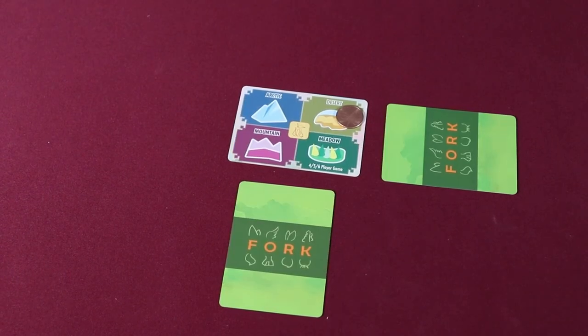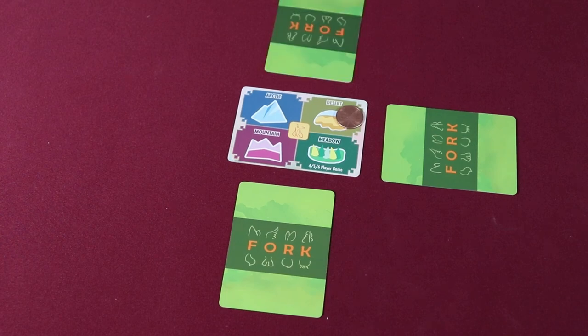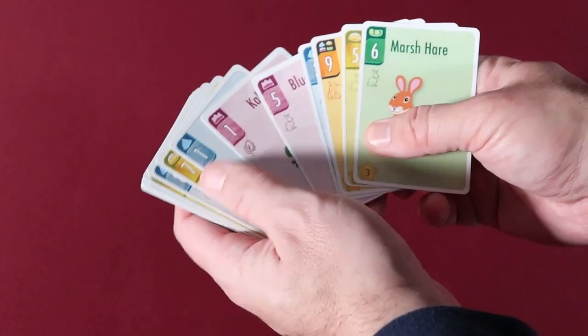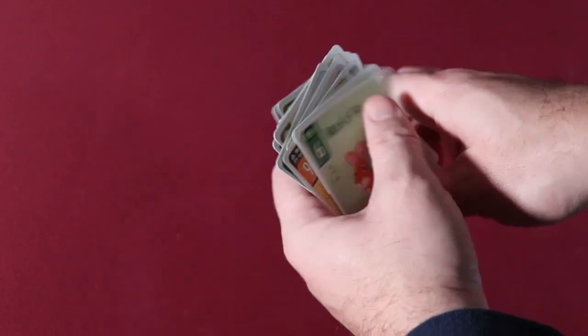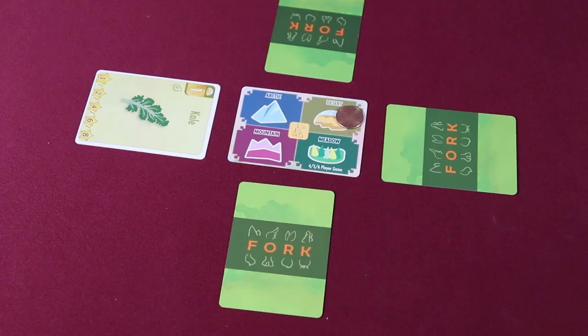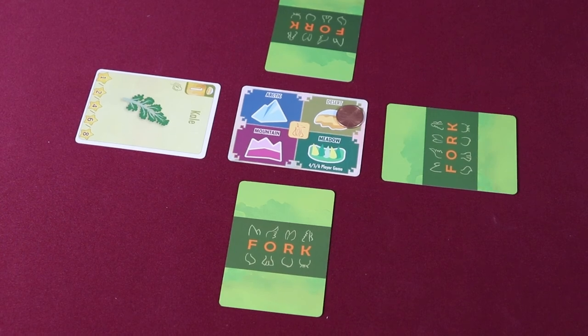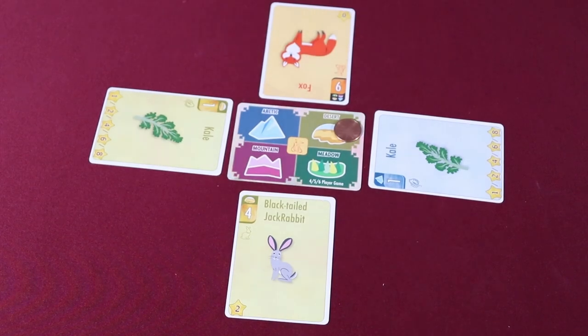Once terrain is chosen, all players choose a card from their hand and play it in front of them, beginning with the start player and continuing clockwise until all players have played a card. If a player doesn't have a card matching the active terrain, they may play any other card. All cards must be placed face down, with the exception of any Kale cards, which are placed face up for all to see. When all players have made their choice, all cards are flipped face up and scoring for the round begins.